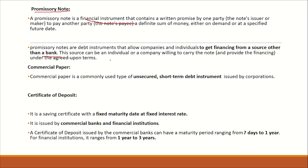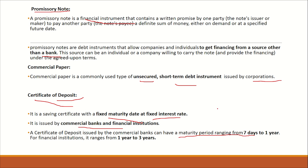Commercial paper is a short-term, unsecured debt instrument through which corporations raise money. It is also a type of promissory note. A certificate of deposit is a promissory note issued by commercial banks and financial institutions with a fixed maturity date and fixed interest rate. For commercial banks, the maturity period is 7 days to 1 year; for financial institutions, it is 1 to 3 years.